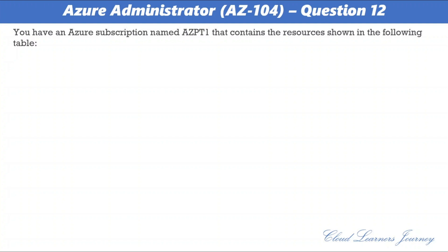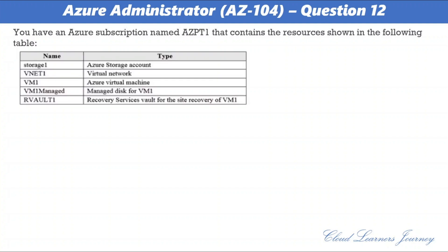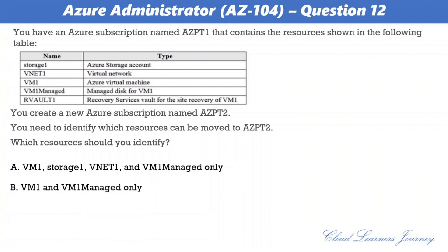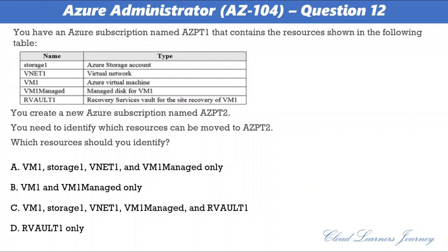Question number 12. You have an Azure subscription named azpt1 that contains: Storage1, VNet1, VM1, VM1 managed disk, and RVault1. You create a new Azure subscription named azpt2. You need to identify which resources can be moved to azpt2. The correct answer is all of them: VM1, Storage1, VNet1, VM1 managed disk, and RVault1. Moving a resource only moves it to a new resource group or subscription — it does not change the location of the resource.